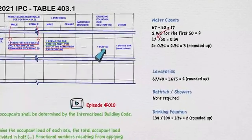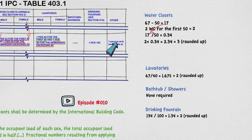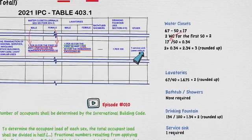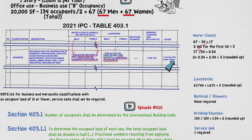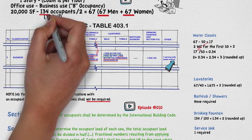Last but not least in the table is the 'other' column. Looking at the requirements, we see the service sink — often called a janitor sink or mop sink. This simply states one service sink regardless of the occupancy count or size of the floor. There is a note stating that for business and mercantile classifications with occupant loads of 15 or fewer, service sinks shall not be required. But our project has way more than 15 occupants.